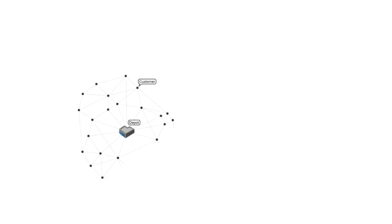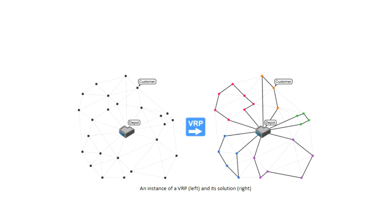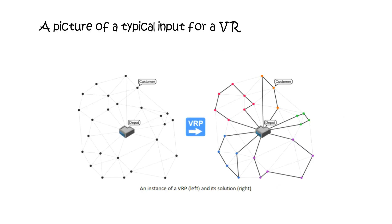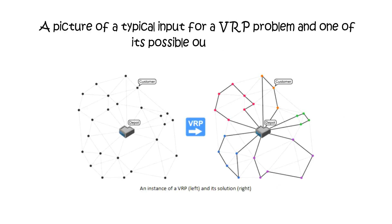In the two figures below, we can see a picture of a typical input for a VRP problem and one of its possible outputs. You can find the simpler Excel solver attached in the link below.